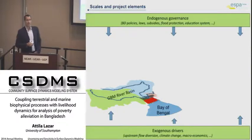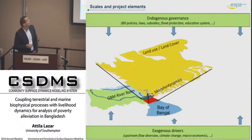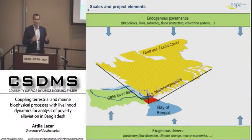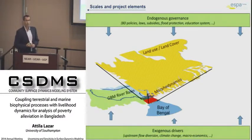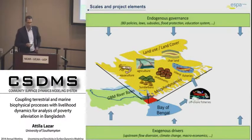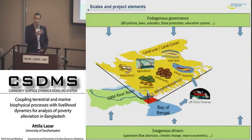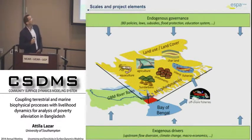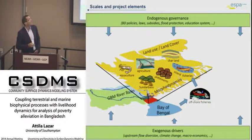These aspects are considered to some extent in this project. When we zoom down to the local scale, to the study area, we are interested in morphodynamic changes, land use, land cover changes, and also the changes of the productivity of the system — the relationship of the environment, and how that changes over time and space.